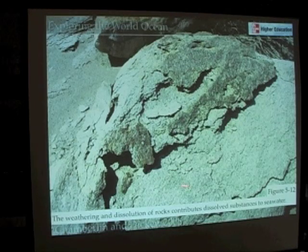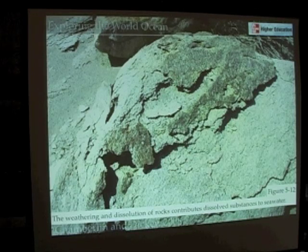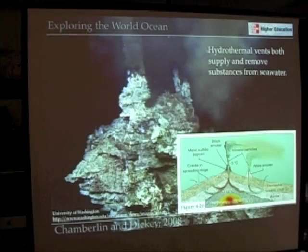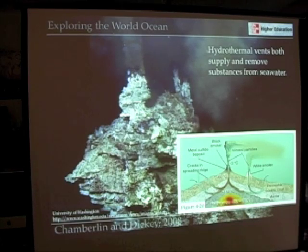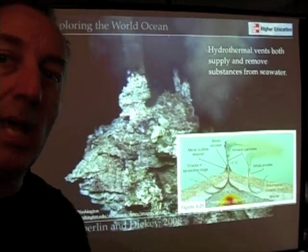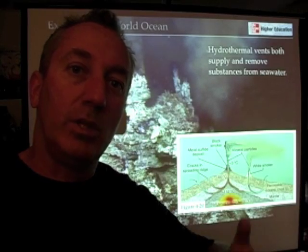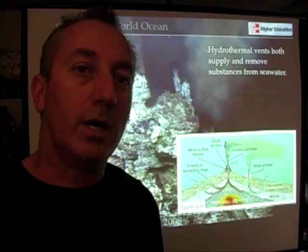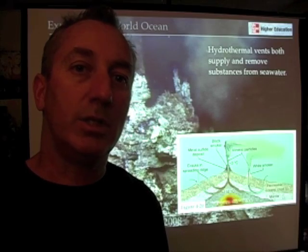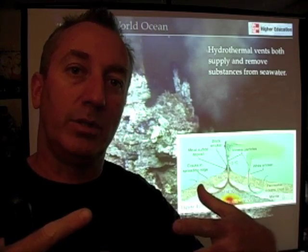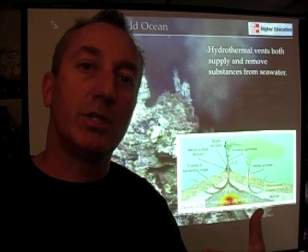As rocks break down, certain elements and certain compounds in rocks, including salts, are dissolved into the water. And as hydrothermal vents circulate seawater, they supply salts and other elements to seawater. So it's the chemical breakdown of rocks and the hydrothermal processes going on at oceanic ridges that supply salt to the ocean over geologic time scales.